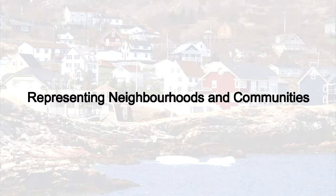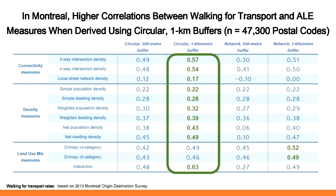We'll go through two more decisions focused on representing different neighborhoods and the type of unit of analysis. For buffer sizes and shapes in Montreal, we constructed two circular and two street network-based buffers varying in radius — 500 meters and one kilometer for both. We tried 12 different measures of walkability or active living environments, and found that measures derived using the circular one-kilometer buffer tended to be most highly associated with walking for transport from the Montreal Origin Destination Survey. The one exception was land use mix, which was slightly better at the network one-kilometer buffer.